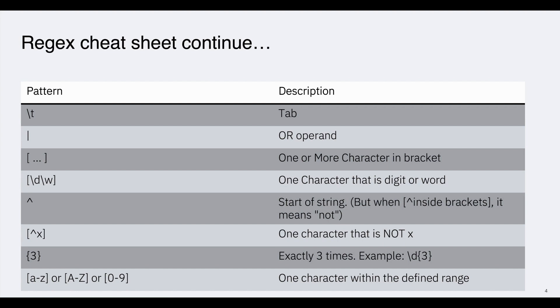You can define a range in square brackets. For example, [a-z] means one character within the defined range, that is a to z.